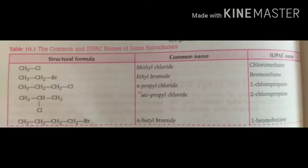This is an example of common and IUPAC names of some haloalkanes. The structural formula CH3Cl has the common name methyl chloride, but the IUPAC name is chloromethane. Second, CH3CH2Br — the common name is ethyl bromide, but the IUPAC name is bromoethane. Similarly, normal propyl chloride is 1-fluoropropane.